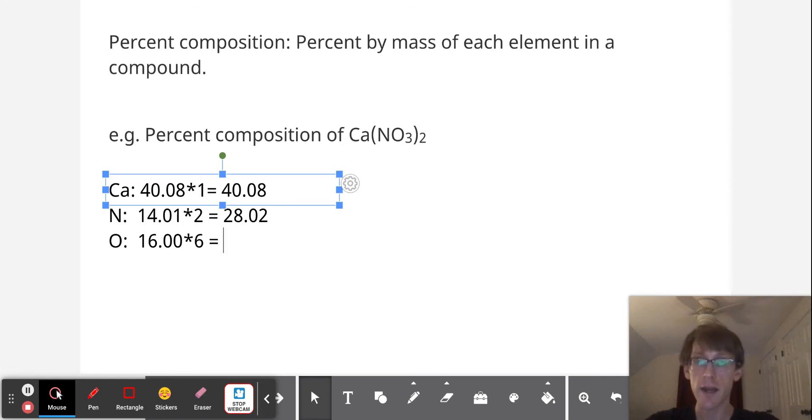For oxygen, there are six atoms. So this comes out to 96.00 grams of oxygen per every mole of calcium nitrate.